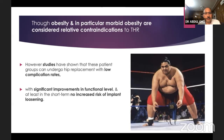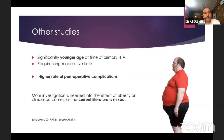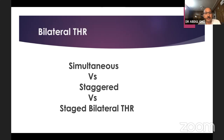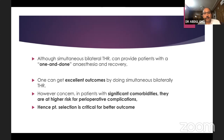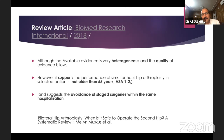Regarding obesity and THR: though morbid obesity is a relative contraindication, series report low complication rates with significant functional improvement. However other studies show younger patients, longer operative times, and higher perioperative complication rates. Regarding simultaneous bilateral THR: it offers one anesthesia and recovery, with excellent results, but in patients with significant comorbidities the risk of postoperative complications is high and patient selection is critical.